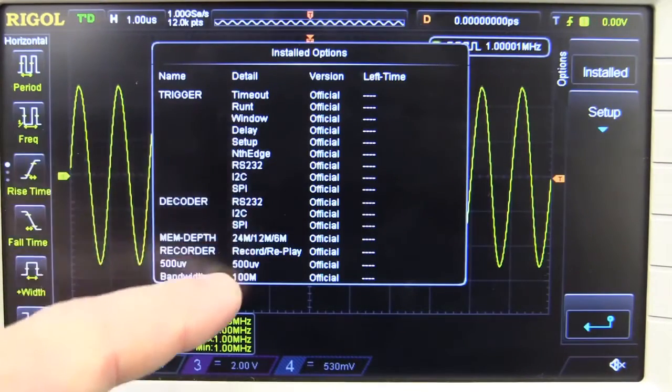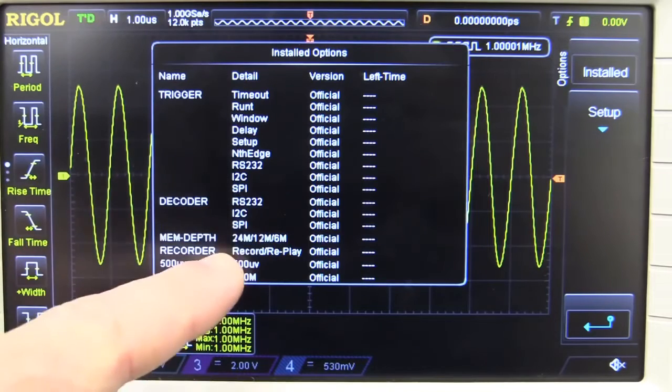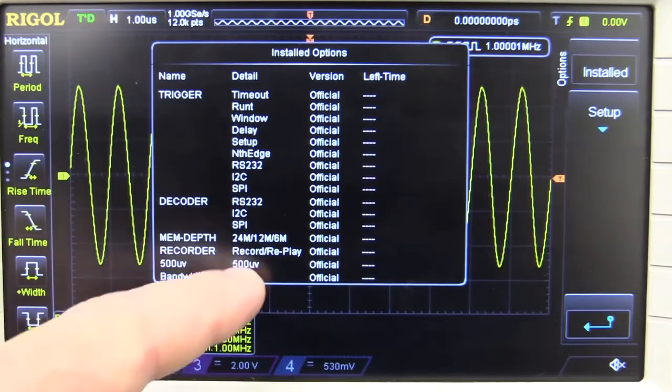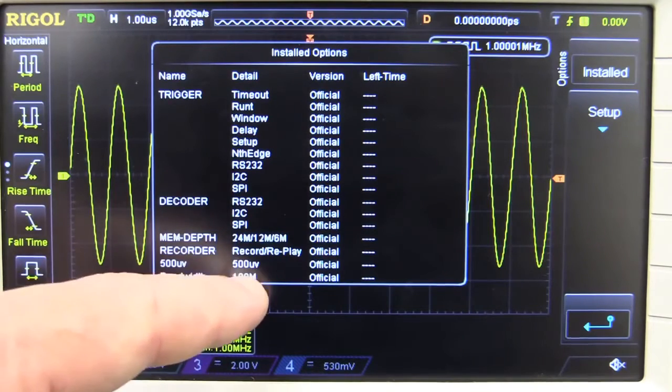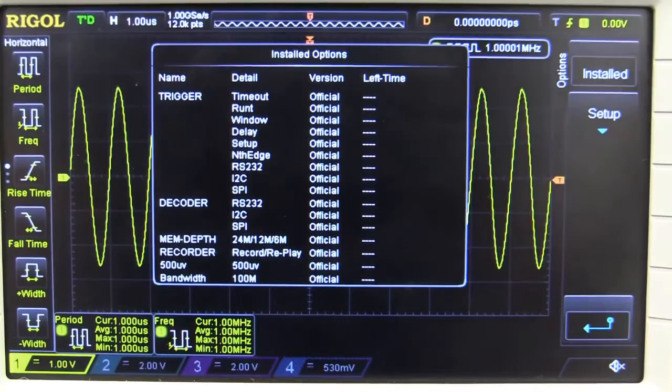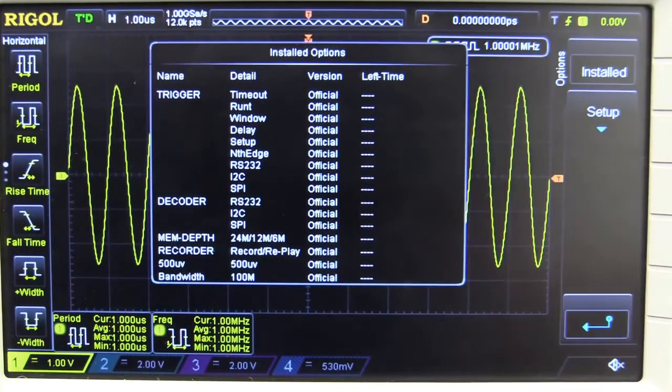And these are all the various options that you can get, all the triggering ones, the decoders, the memory depth up to 24 meg, the recorder, which is the segmented memory feature, and the bandwidth up to 100 megahertz. So you can buy these. And yes, the scope is hackable because the 100 megahertz bandwidth is actually physically built into the hardware and the software options as well. So, if you're into that sort of thing, it is possible at the moment.